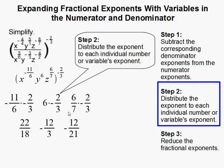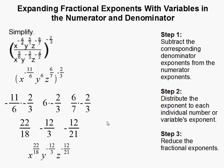So we multiply those out, and we get these values here. So now I can rewrite my expression as x to the 22 over 18, y to the negative 12 over 3, and z to the negative 12 over 21. These are terrible values, so the last thing we need to do is reduce them.